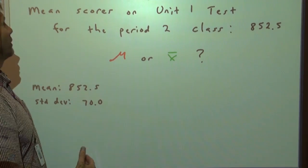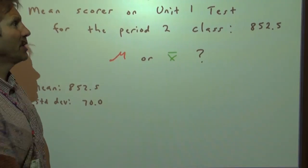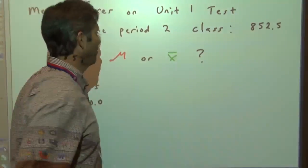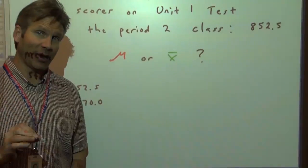What if we want the mean scores on the Unit 1 test for the Period 2 class? Maybe the mean score was 852.5. Is that a population mean, or is it a sample mean? Well, by golly, it depends.